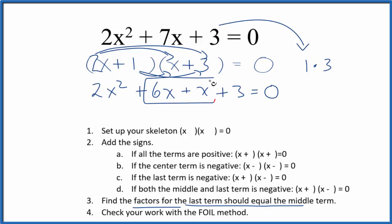And I can see that this is going to add up to 7x. So I'll have 2x squared plus 7x plus 3. That equals 0. That's the same thing as up here. So I know I did this correctly.